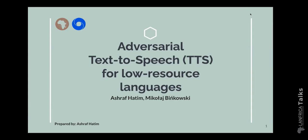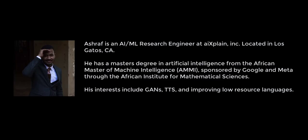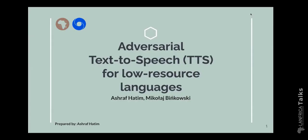A little bit about him. Ashraf is an AI machine learning research engineer at AI Explain Incorporated, located in Los Gatos, California. He has a master's degree in artificial intelligence from the African Master of Machine Intelligence, sponsored by Google and Meta through the African Institute for Mathematical Sciences. His interests include generative adversarial networks (GANs), text-to-speech, and improving low resource languages. I'm very happy to have you, Ashraf, and the floor is yours.